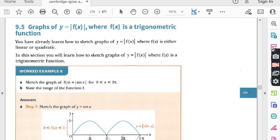Today we are going to start another exercise which is also related to graphs of trigonometric functions, but this time we will learn the graph of trigonometric functions with absolute value. You can see on the screen, Article 9.5: Graphs of y equals |f(x)|, where f(x) is a trigonometric function.